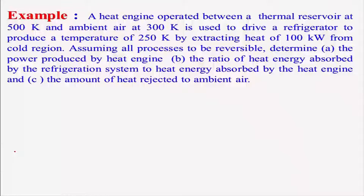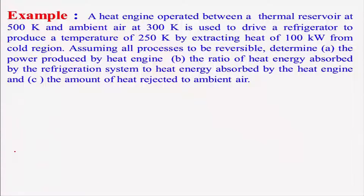A heat engine operated between a thermal reservoir at 500 Kelvin and ambient air at 300 Kelvin is used to drive a refrigerator to produce a temperature of 250 Kelvin by extracting 100 kilowatt of heat from the cold region. The heat engine produces work which is used to run the refrigerator. Assuming all processes are reversible, we need to determine the power produced by the heat engine, the ratio of heat absorbed by the refrigeration system to that absorbed by the heat engine, and the amount of heat rejected to ambient air.